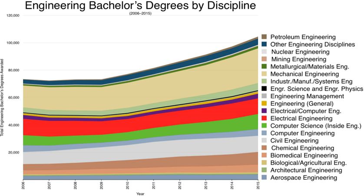In Austria, similar to Germany, an engineering degree can be obtained from either universities or Fachhochschulen. As in most of Europe, the education usually consists of a three-year bachelor's degree and a two-year master's degree. A lower engineering degree is offered by Höheren Technisch Lehranstalten (HTL), Higher Technical Institutes, a form of secondary college which covers grades 9 to 13, with disciplines like civil engineering, electronics, information technology, etc.